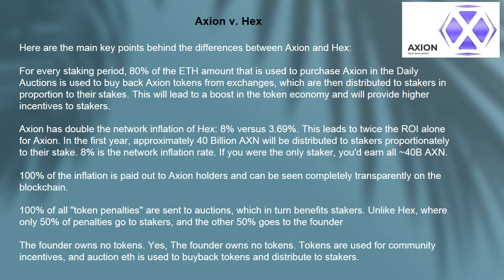Axion vs. HEX. Here are the main key points behind the differences between Axion and HEX. For every staking period, 80% of the ETH amount that is used to purchase Axion in the daily auctions is used to buy back Axion tokens from exchanges, which are then distributed to stakers in proportion to their stakes. This will lead to a boost in the token economy and will provide higher incentives to stakers.